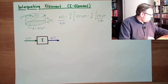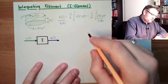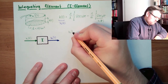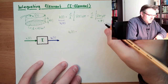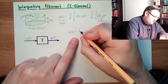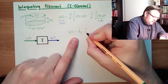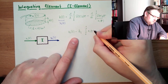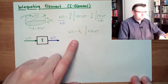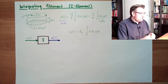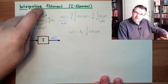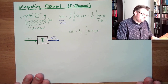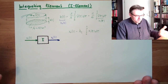If I now write this as a transfer function just with XO and XI, it would look like this: XO equals KI — some factor — times the integral of the input variable up to the current time. This is the transfer function of an integrating element, which is summing the input, weighted with some factor. That's an integrating element.